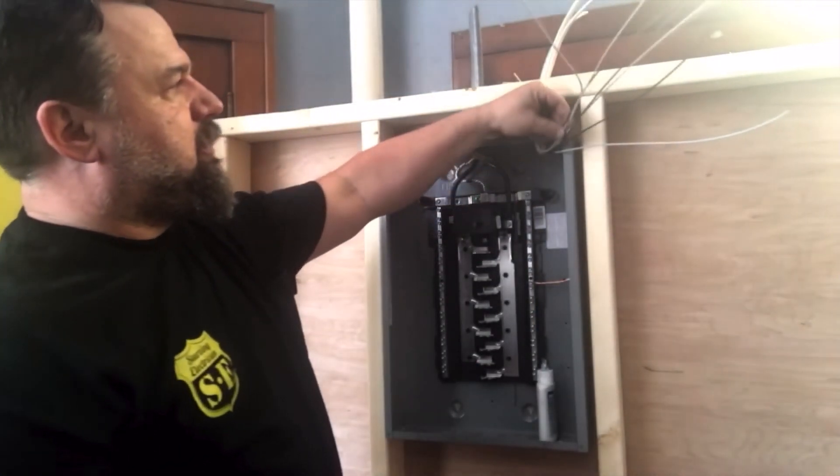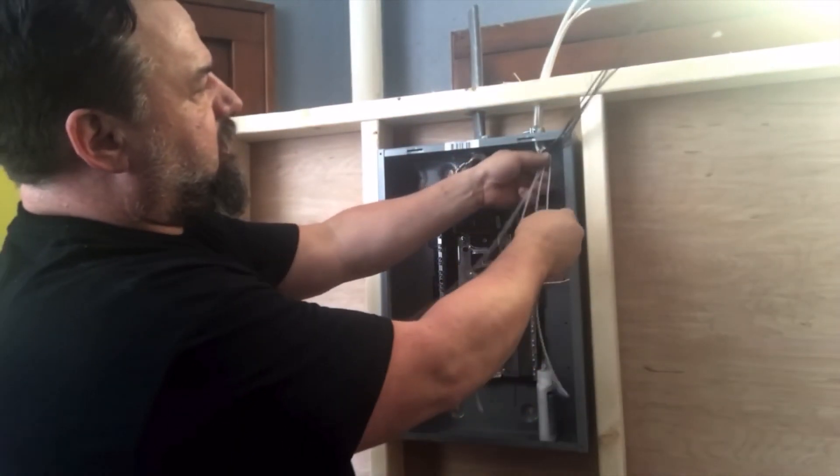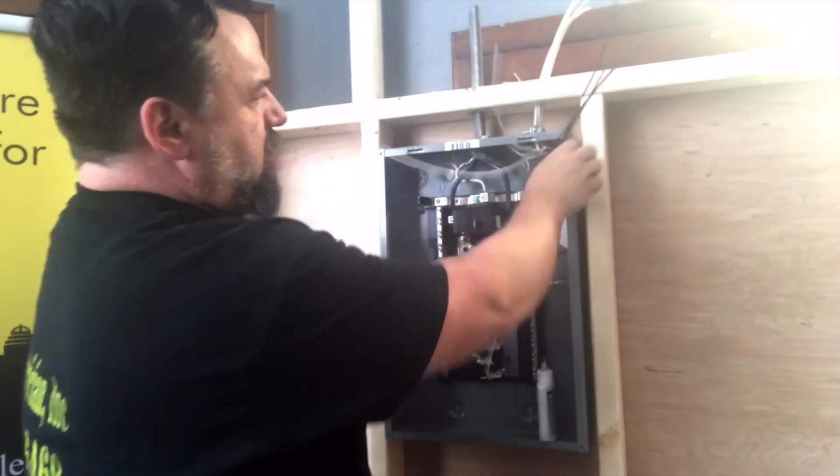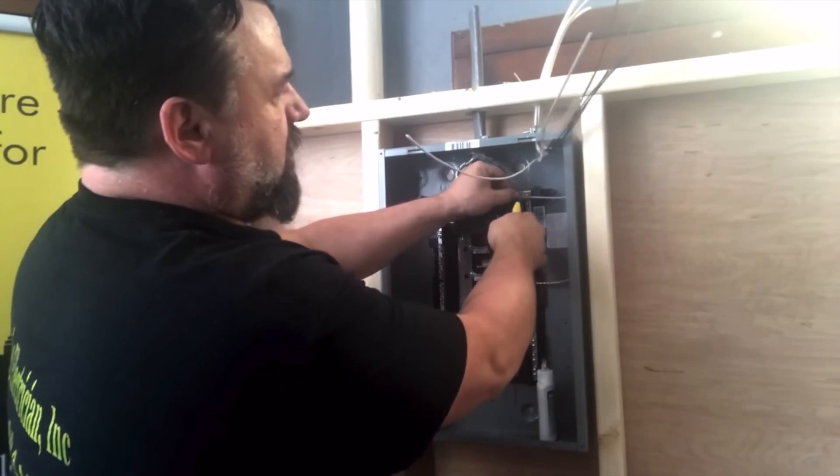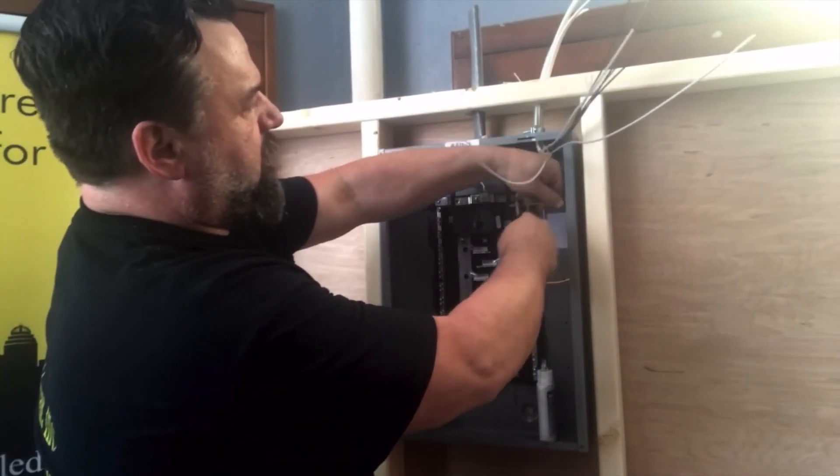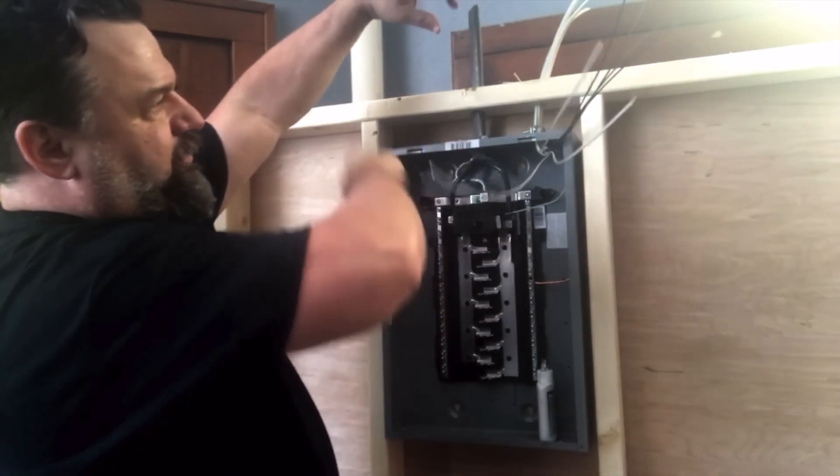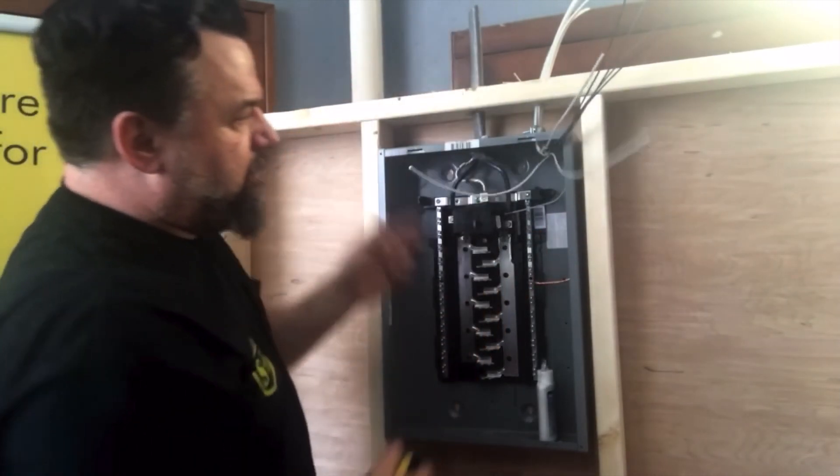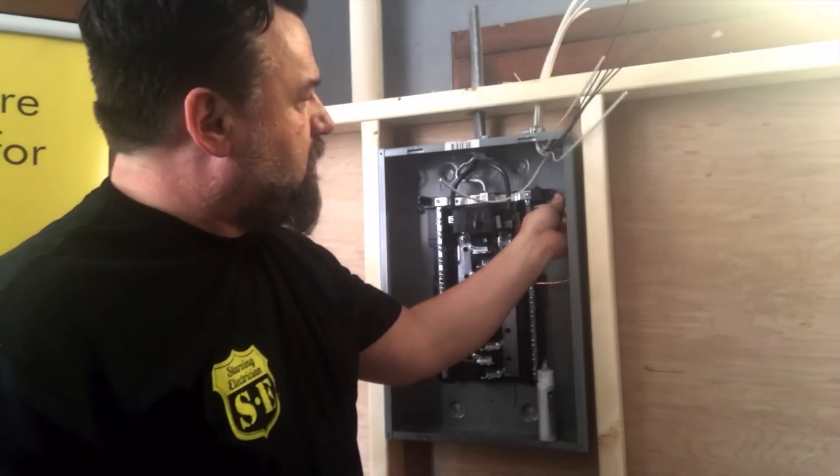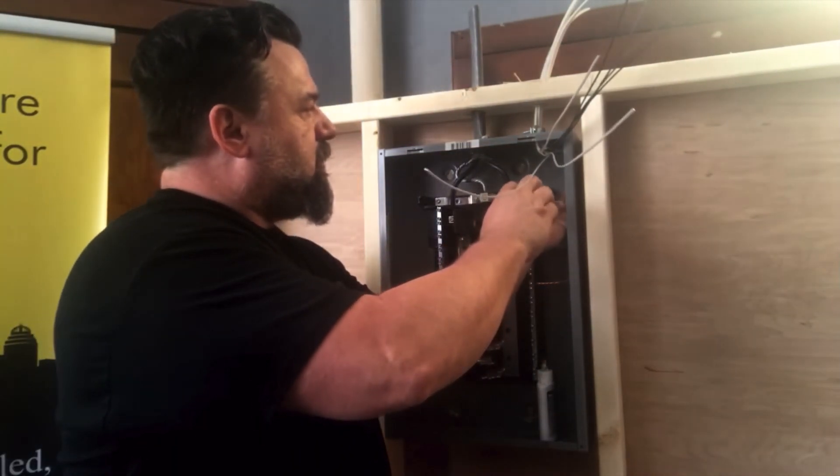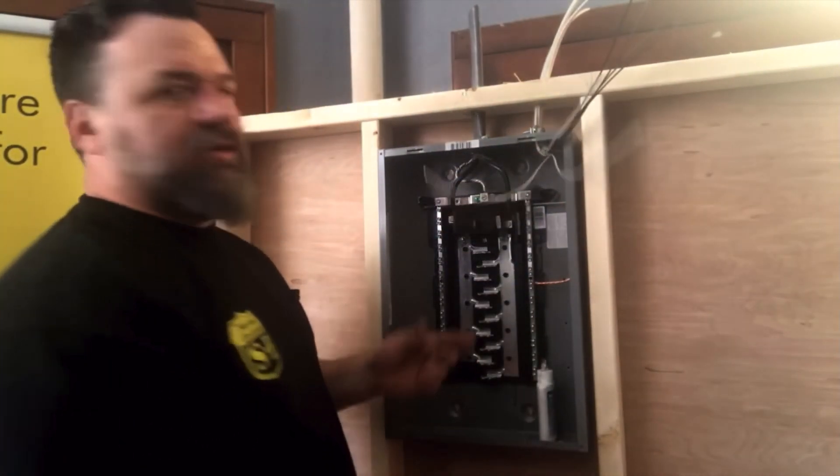Now, we have our neutrals. Neutrals have to be landed individually in each one of these lugs because they are current carrying conductors. This is AC, alternating current. AC goes from the hot to the neutral, back and forth. It alternates. So if there's a light on, it's going to go through the light and back to the neutral into here. You can pull this off and you get zapped by it because now it's carrying current. Each one has to be individual under each lug because two current carrying conductors can produce heat.